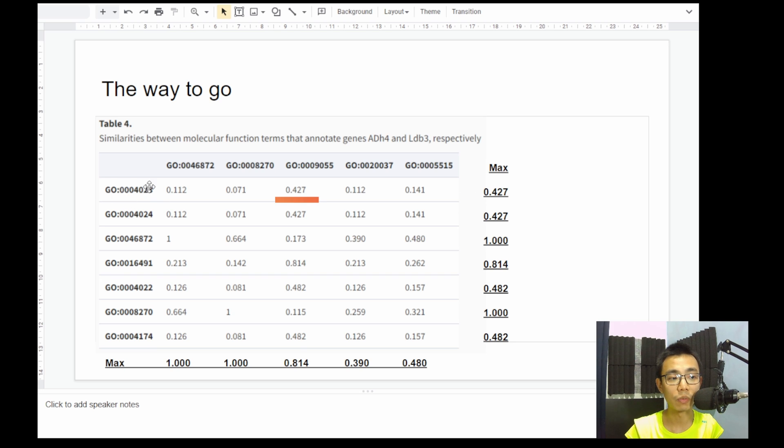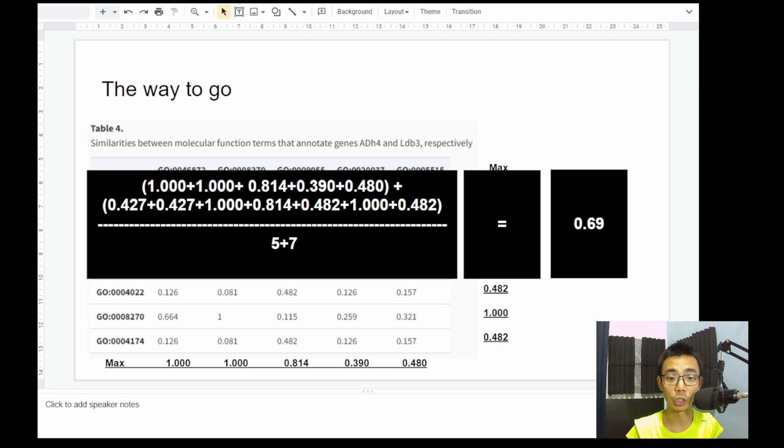So what we do later is we try to find a maximum between every single row and every single column. So 0.246 for GO:0004023 is the most similar to GO:0009055, similar with GO:0004024 and GO:0009055. And we have this is exactly the same. We have 0.815 between these two terminologies and so on and so forth. So we find out every single possible highest combination among them. And then what we do is we just add them up and average them.